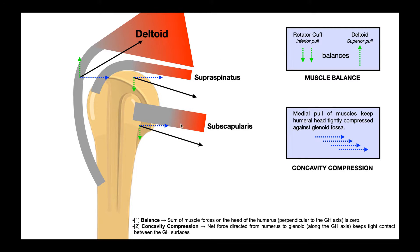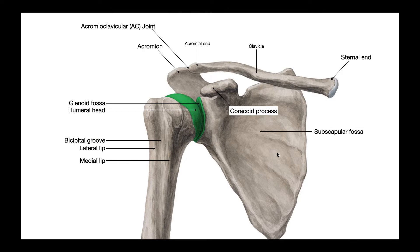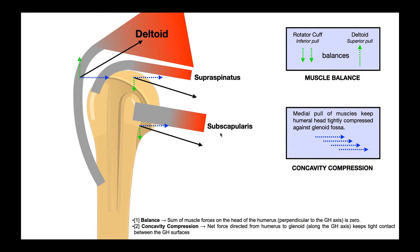For the rotator cuff muscles, it really doesn't matter which one we look at — they all generally do the same thing. We're looking at an anterior view because this is the lesser tubercle. The one that sits on top is the supraspinatus. The anterior rotator cuff muscle sitting in the subscapular fossa is the subscapularis. There are two more rotator cuff muscles on the other side — infraspinatus and teres minor — and they do the same kind of thing.